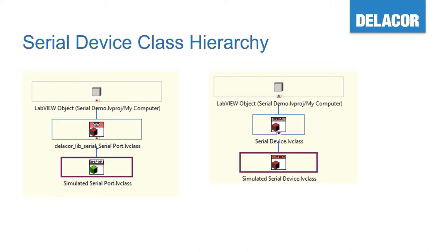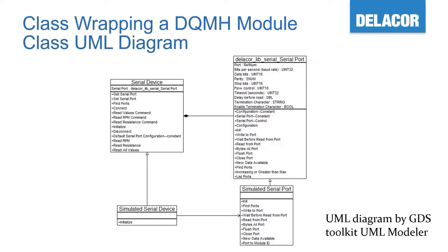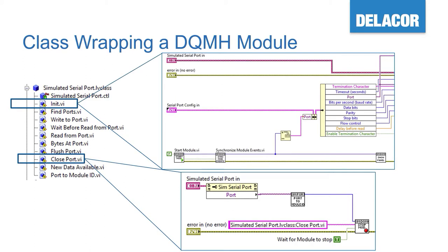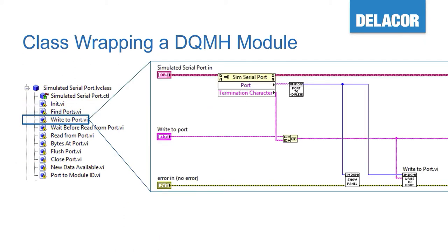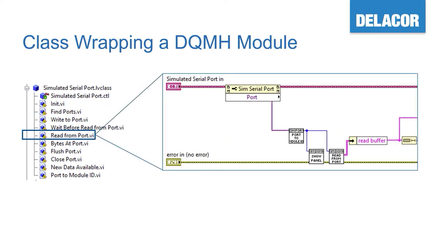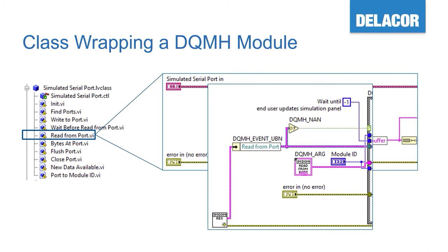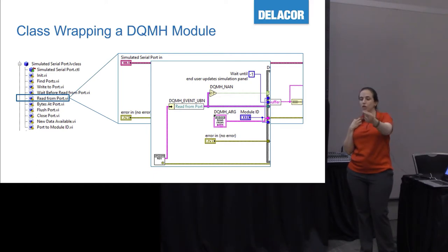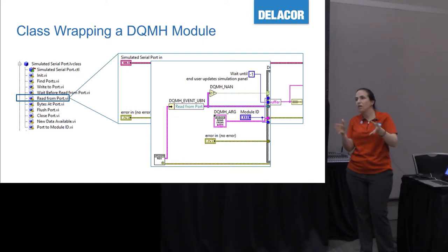Here is the class hierarchy — I ran the GDS toolkit to do reverse analysis and cleaned it up a bit. The init starts the module; close port stops the module; write to port is a request-and-wait-for-reply. There's also a trick to make it always wait forever so you don't have to remember to set that — because we're waiting for the developer to interact with the simulated panel when debugging.